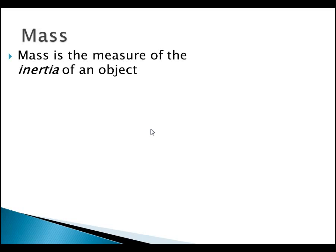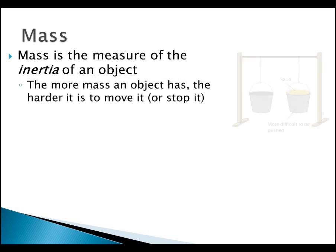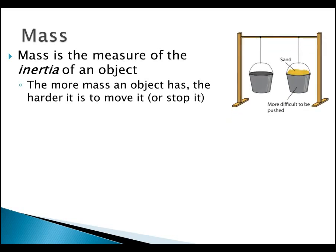Let's talk about mass, which is kind of the same thing as inertia. Mass is the measure of inertia of an object. When we're talking about the mass, we might say it's 10 kilograms — that's not only its mass, that's also its inertia. The more mass an object has, the harder it is to move it or stop it. Imagine we have two buckets: one filled with sand and one empty. The one filled with sand is more difficult to push, and also more difficult to stop.